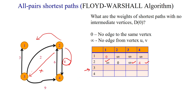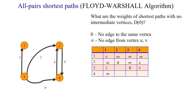Continuing from source vertex 4: 4 to 1 is infinity, 4 to 2 has edge cost 6, 4 to 3 — no direct edge, infinity, 4 to 4 — self-loop, 0. So we have now constructed the initial adjacency matrix — this is one feasible solution and one decision. Next, we consider each vertex as an intermediate vertex sequentially.